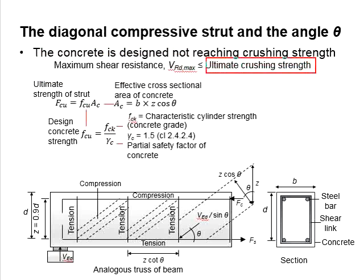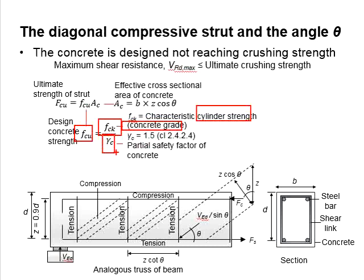The ultimate crushing strength of the concrete is represented by the symbol FCU, which is calculated by multiplying the ultimate concrete stress with the effective cross-sectional area of the strut. The ultimate concrete stress is determined by the characteristic cylinder strength, or concrete grade, divided by the partial factor of safety of 1.5.